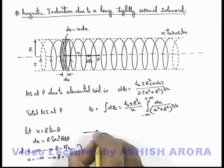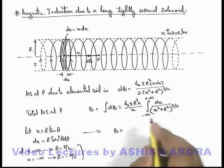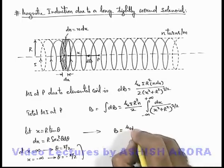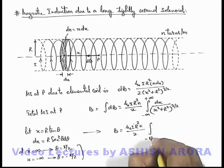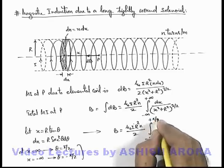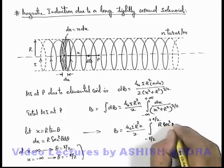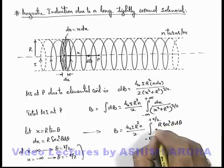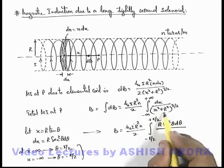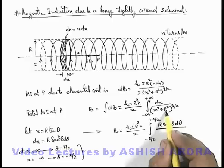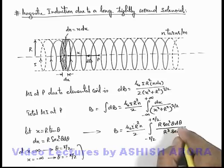So here, correspondingly, if we change the limits as well as the variables, this will be (μ₀ i r² n)/2, integrated from minus π/2 to plus π/2. dx we can write as r sec² θ dθ divided by - if we substitute x = r tan θ, this expression will be (r² sec² θ)^(3/2), so this will become r³ sec³ θ.